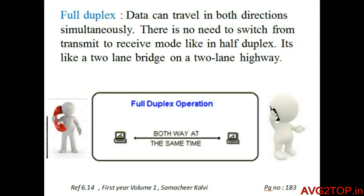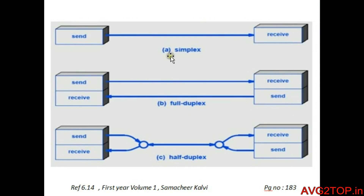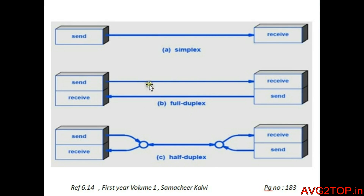In summary: in simplex, only sending is possible and the receiver cannot give feedback if any error occurs. In half duplex, sending and receiving is possible but not both at the same time. In full duplex, sending and receiving can be done both at the same time.